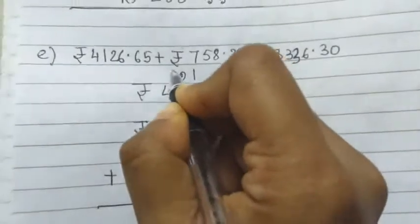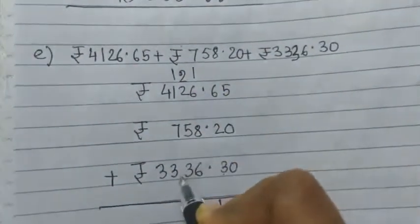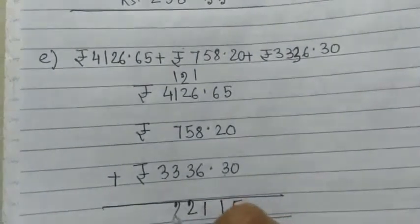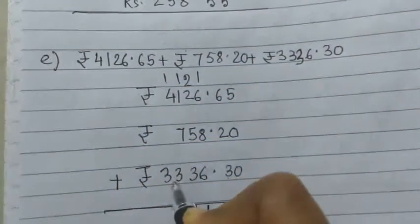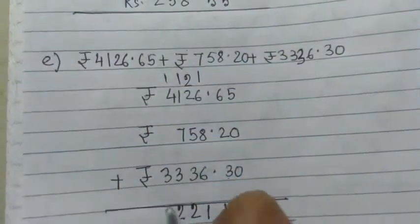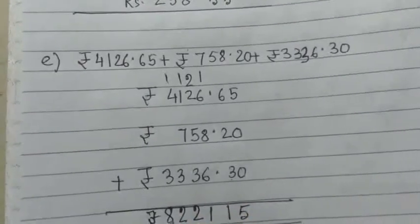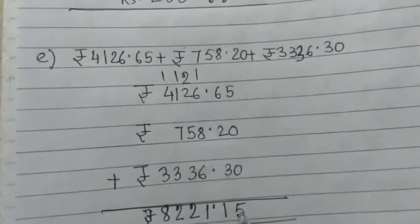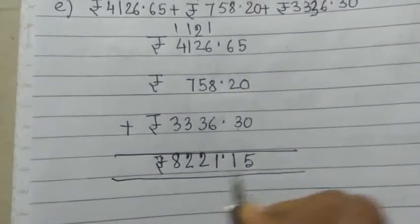Write 2 here, carry 1. 1 plus 1 equals 2, 2 plus 7 equals 9, 9 plus 3 equals 12 again, write 2 here, carry 1. So 1 plus 4 equals 5, 5 plus 3 equals 8. 8,221 rupees. You must put the point after 2 paise from the right side, and 15 paise. So this is the answer.